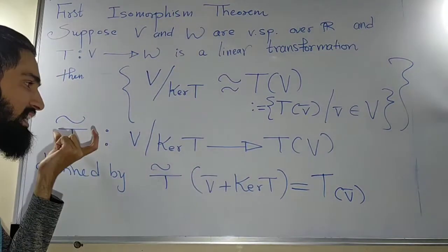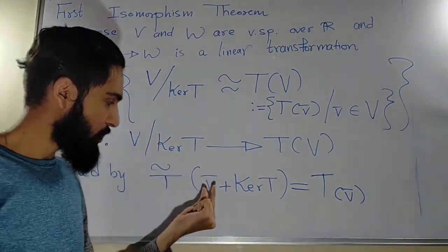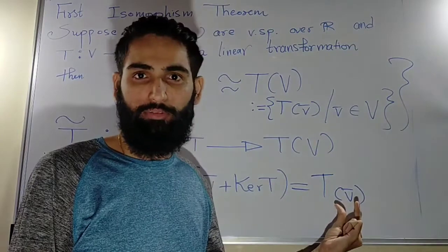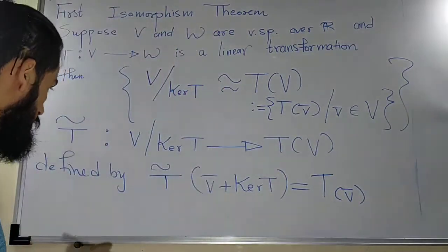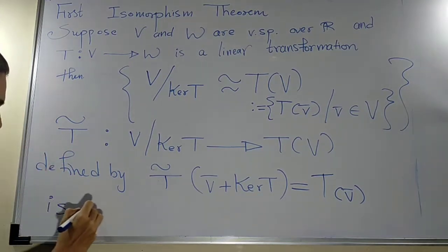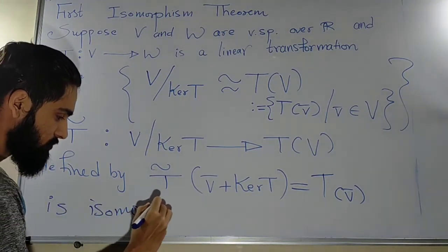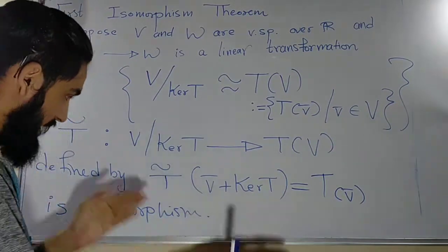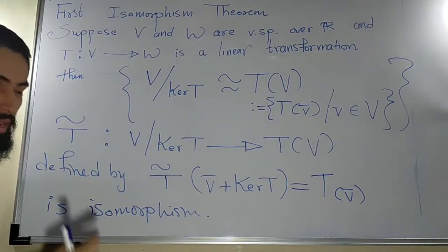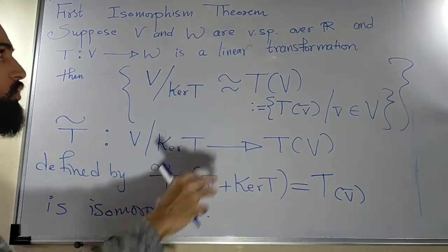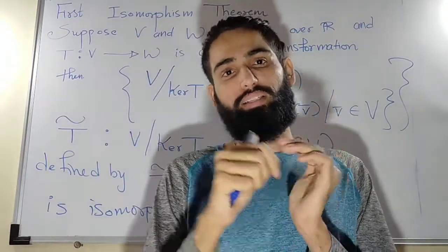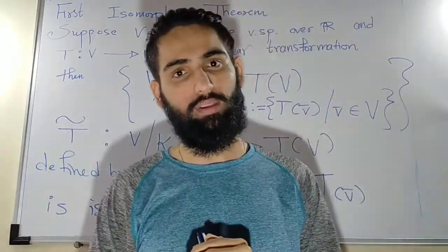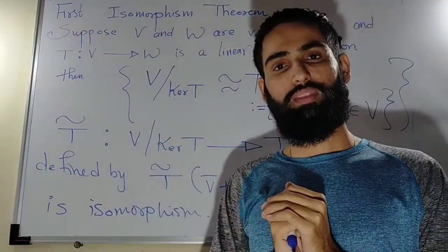T̃ is a function defined so that it maps any coset to the same place where T maps the representative. That is, T̃(v̄ + kernel(T)) = T(v̄). This map is an isomorphism. Both statements are equivalent: one directly says the two spaces are isomorphic, and the other defines the map and says it is an isomorphism. In an exam you can expect teachers to ask you to state and prove the First Isomorphism Theorem, so you should know the theorem. Pause the video, write the statement, and then we'll see the proof.